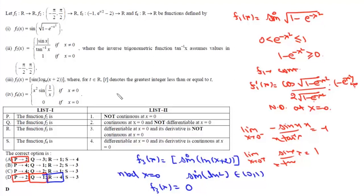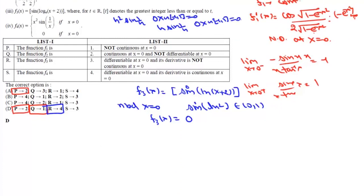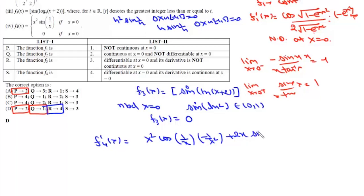Function f4(x) is similar to our main example. For continuity: h²·sin(1/h) → 0·oscillating → 0, so it is continuous. For differentiability: h·sin(1/h) → 0·sin(∞) → 0, so it is differentiable at x = 0. But the derivative involves cos(1/x), which oscillates between −1 and +1 as x→0, so f4 is differentiable but its derivative is not continuous at x = 0. So S matches with 3.